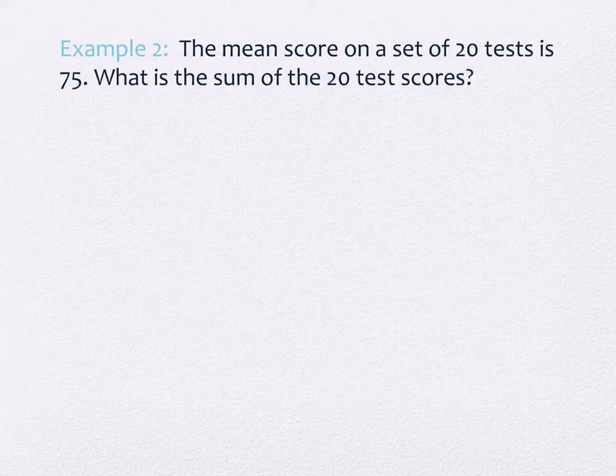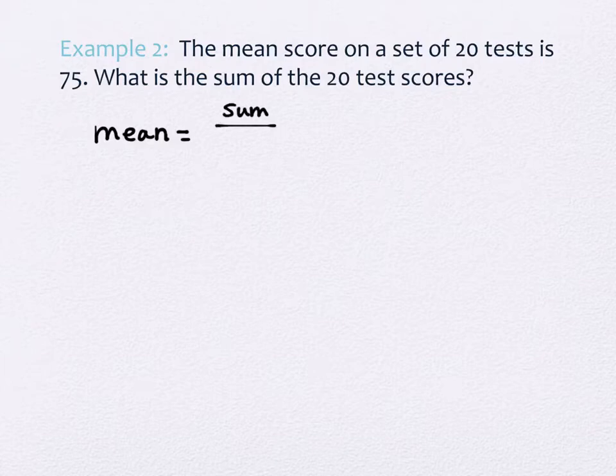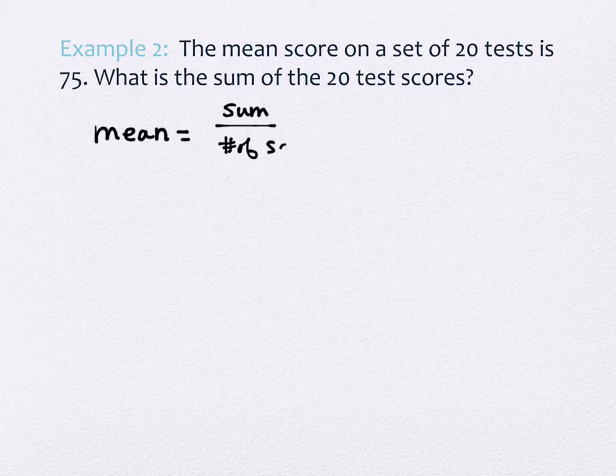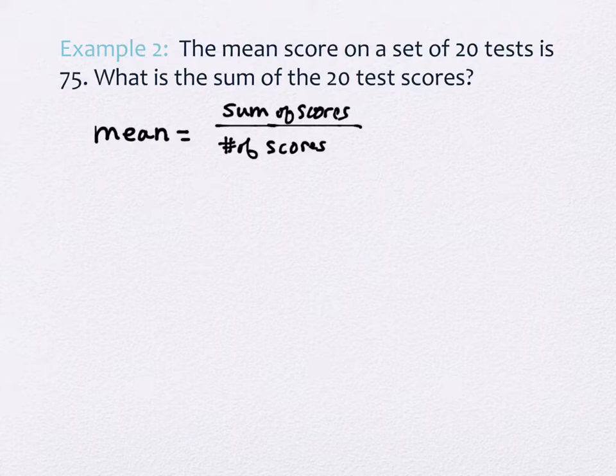This says the mean score on a set of 20 tests is 75. What is the sum of the 20 test scores? So it talks about mean, and if you'll remember, the way we defined mean is that mean is the sum of our scores divided by the number of scores. Does that make sense? That's what we're doing. We sum everything up, and we divide by the number of scores or the number of points possible or whatever we're doing.